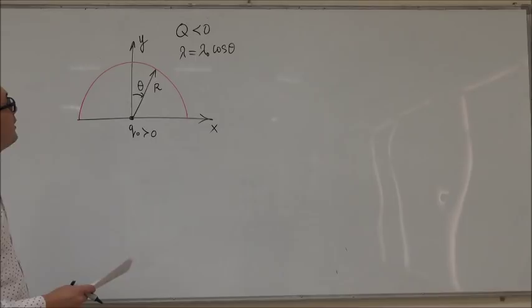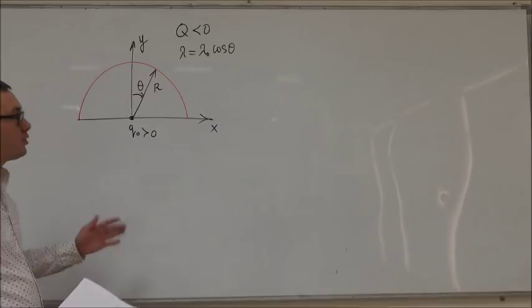So, in this question, we are given a negative charge which is making a semicircle. The total amount of charge is Q.